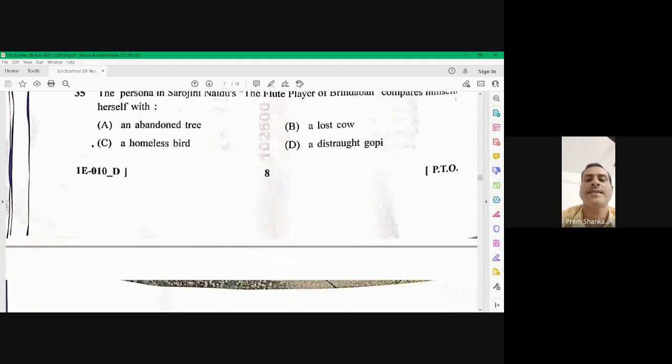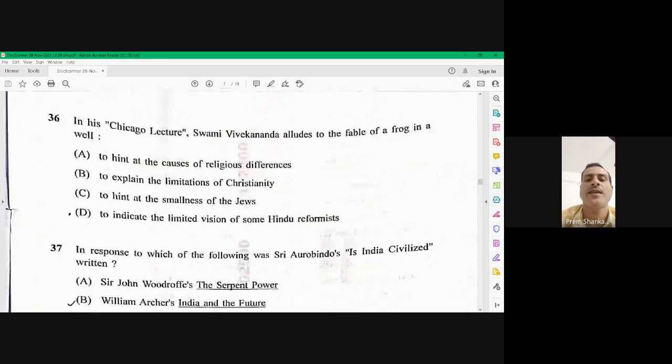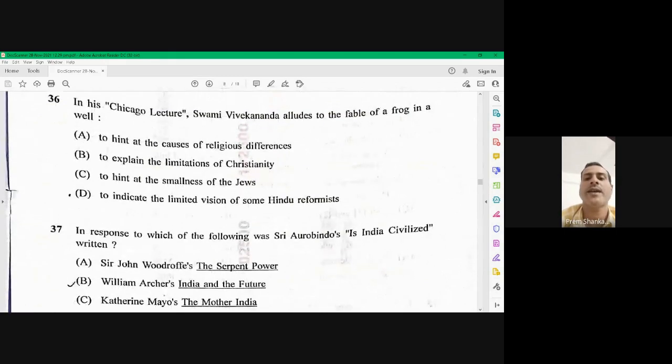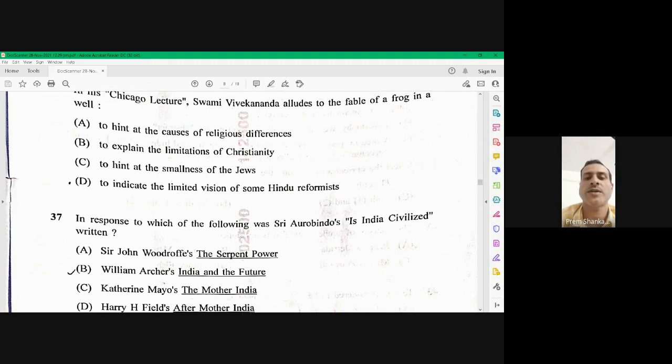Moving on to question number 36, in Chicago lecture, Swami Vivekananda alludes to the fable of a frog in a well. So he gave lots of stories. And this story, the fable of a frog in a well is about giving a hint at the cause of religious differences. So A is the right option for question number 36.